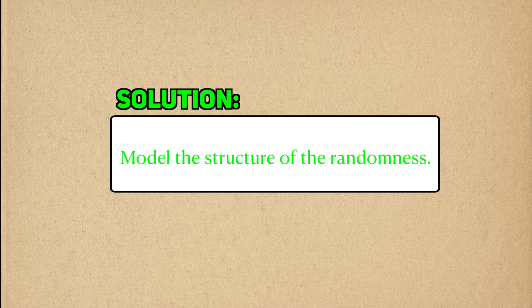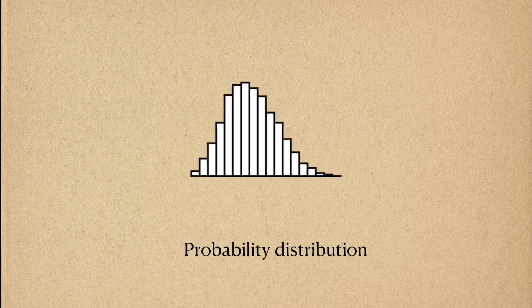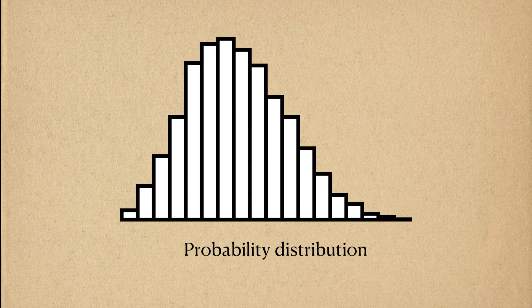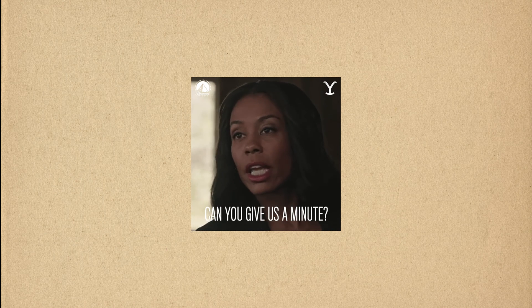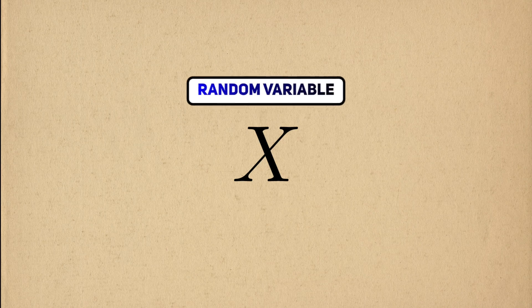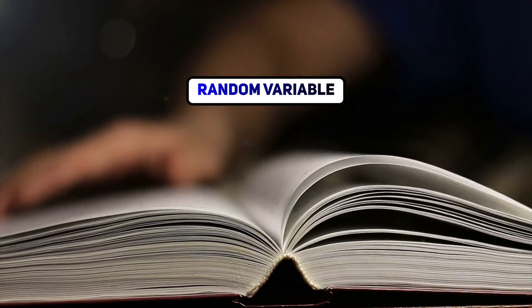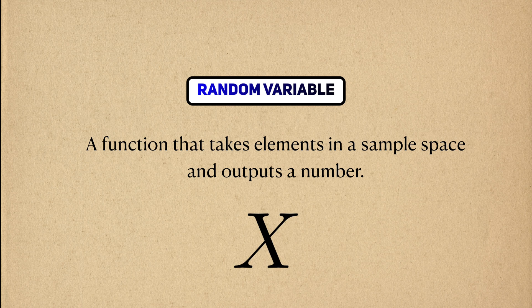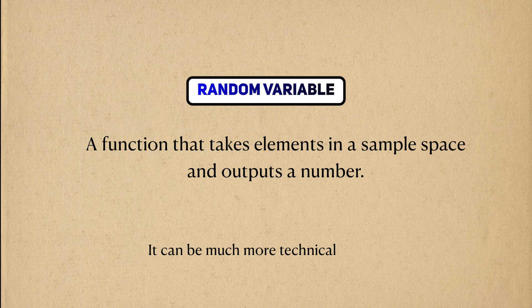Statisticians use mathematical models to impose structure on this randomness. To understand what I mean by structure, we need to understand the probability distribution. But before we get to that, we need to learn about the random variable. One of the basic elements of a statistical model is the random variable. If you were to read about random variables in a textbook, you would see that a random variable is a function. This function takes elements in the sample space of an event and outputs a number. There are more formal definitions of a random variable, but those definitions aren't that helpful to us statisticians. Instead, we'll ground our understanding in a few examples.